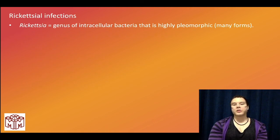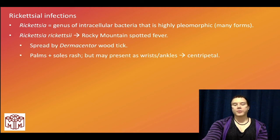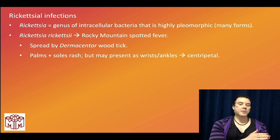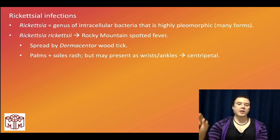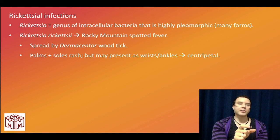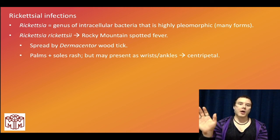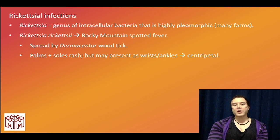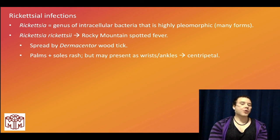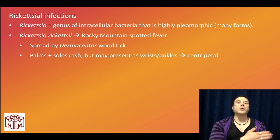Rickettsial infections: Rickettsia is a highly pleomorphic intracellular bacterium, mostly rod-like. Rickettsia rickettsii causes Rocky Mountain spotted fever, spread by the Dermacentor wood tick — not the Ixodes tick. Ixodes tick is for Lyme disease, Ehrlichia chaffeensis, Anaplasma, and Babesia. Rocky Mountain spotted fever causes a palms-and-soles rash — other important causes are secondary syphilis, Coxsackie A (hand-foot-mouth disease), and Kawasaki. More difficult questions can describe a rash starting on the wrists and ankles moving inward — a centripetal rash.